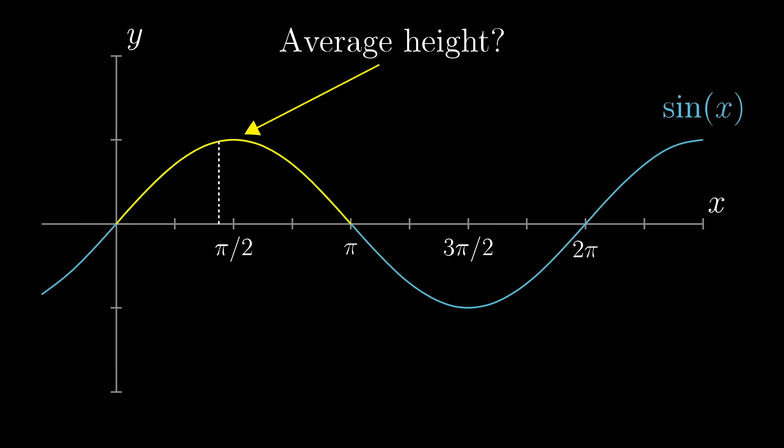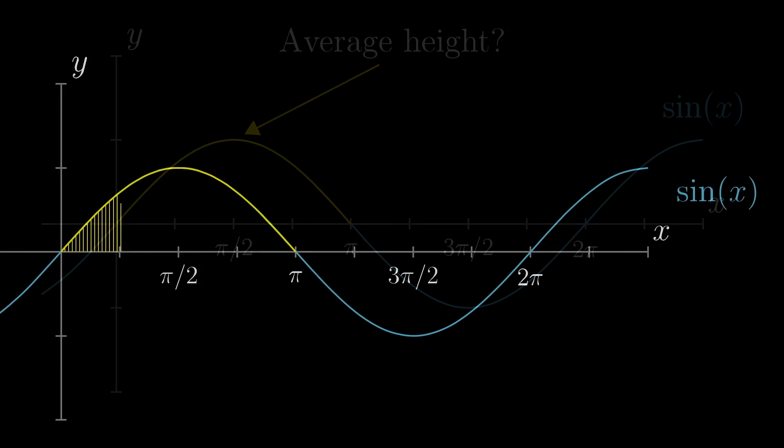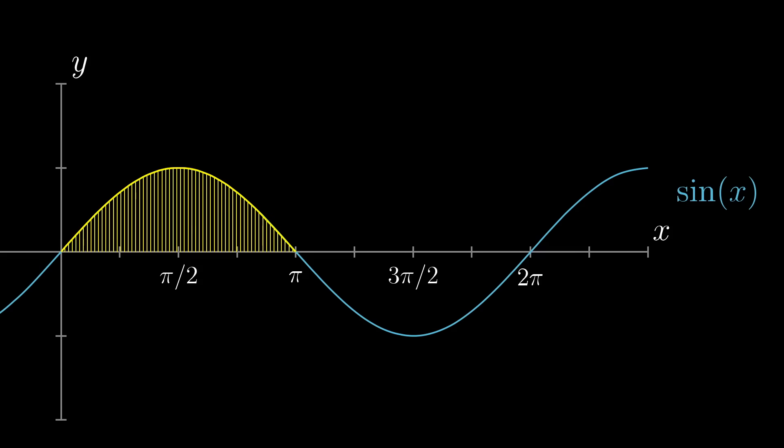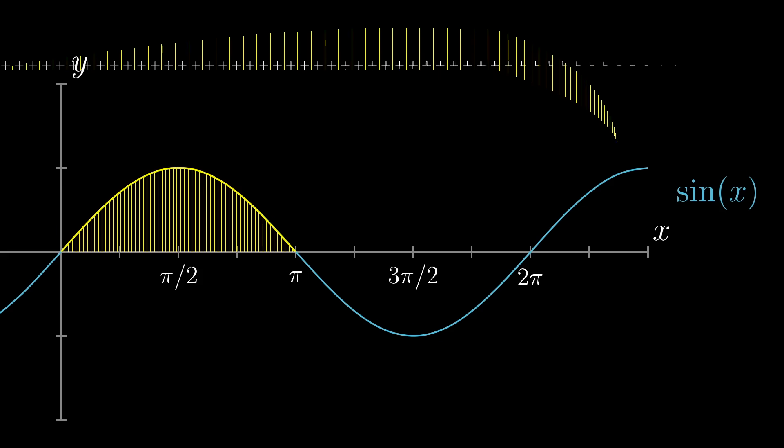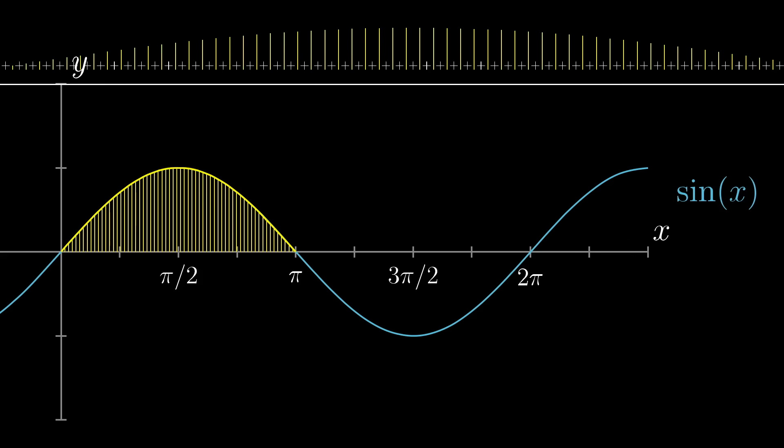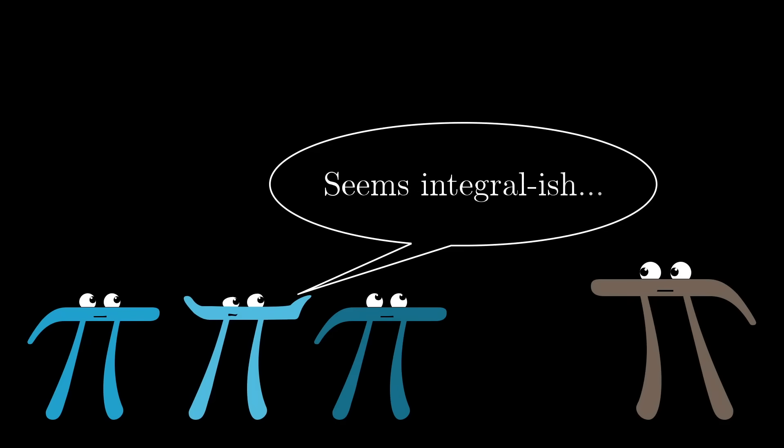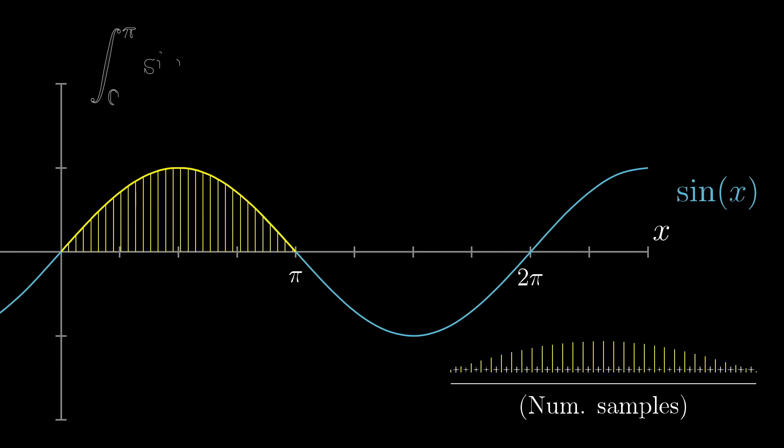And presumably, if the idea of an average height among all infinitely many points is going to make any sense at all, the more points we sample, which would involve adding up more and more heights, the closer the average of that sample should be to the actual average of the continuous variable. And this should feel at least somewhat related to taking an integral of sine of x between zero and pi, even if it might not be exactly clear how the two ideas match up.